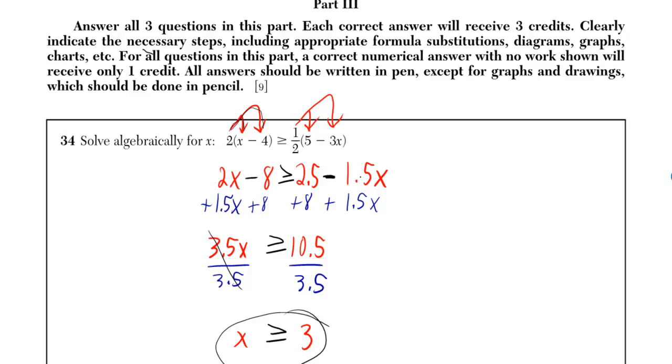Then, you want to add 1.5x to both sides, and then I'll cancel out the minus 1.5x on the right side, and now your x terms will all be pushed to the left side. So then you'll just have 3.5x.